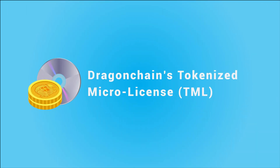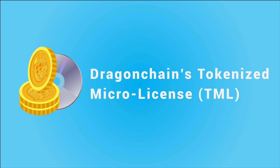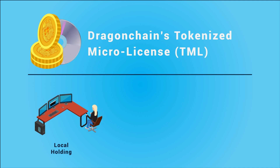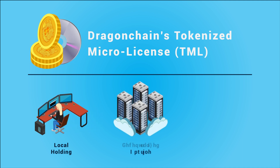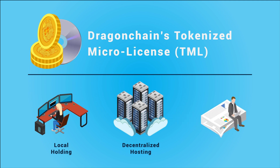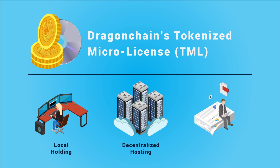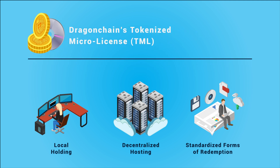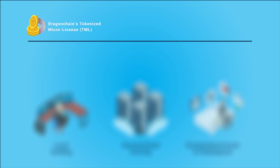DragonChain's tokenized micro license was created to provide a new model for software access. This model will allow for the local holding of licenses, much like the early models, yet also allow for decentralized hosting of the software services. It also standardizes many flexible forms of redemption via software access or execution.